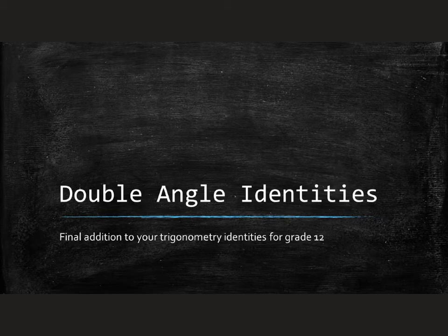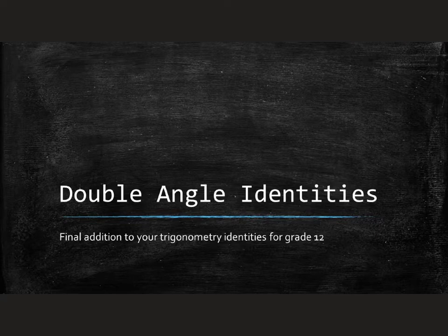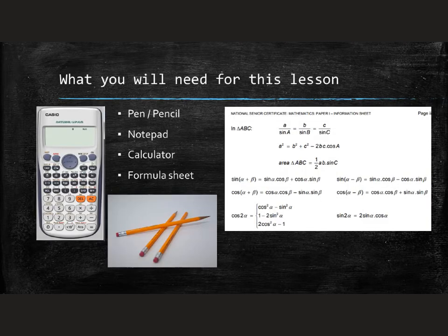Gentlemen, our final addition to grade 12 trigonometry is now the double angle identity. You saw compound angles earlier, and you're going to be working with them shortly in your go formative. And the double angle identities...